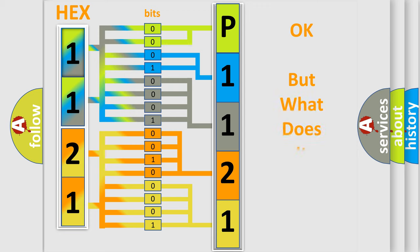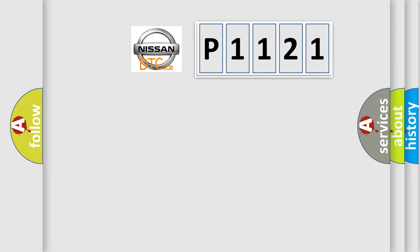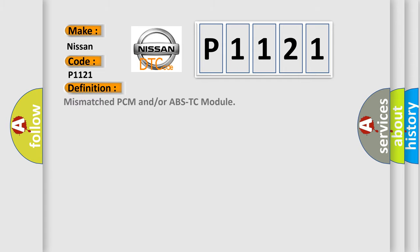We now know in what way the diagnostic tool translates the received information into a more comprehensible format. The number itself does not make sense to us if we cannot assign information about what it actually expresses. So, what does the diagnostic trouble code P1121 interpret specifically for Nissan car manufacturers? The basic definition is: mismatched PCM and/or ABS-TC module.